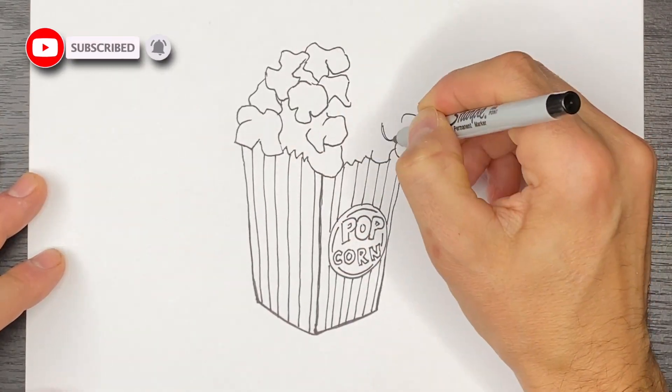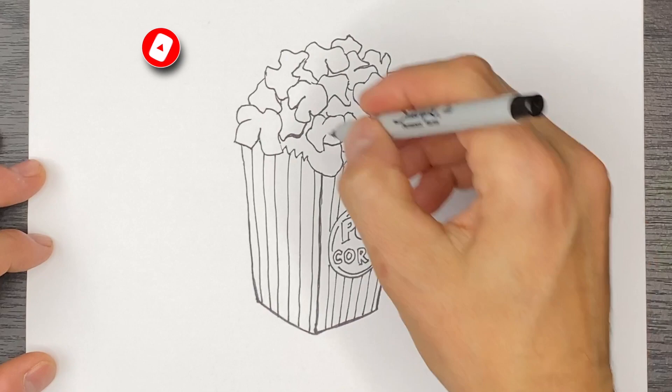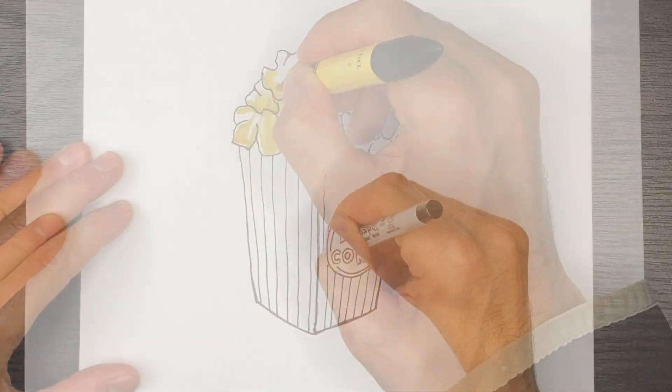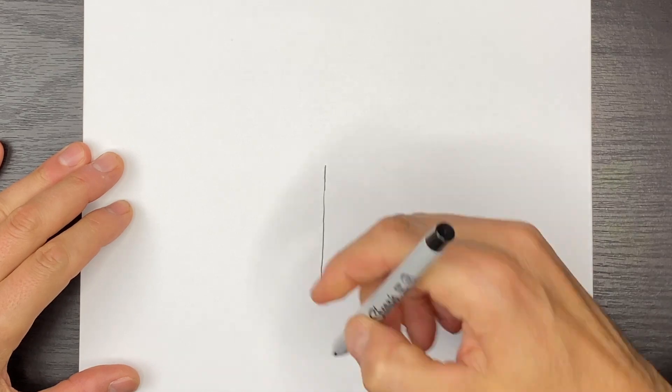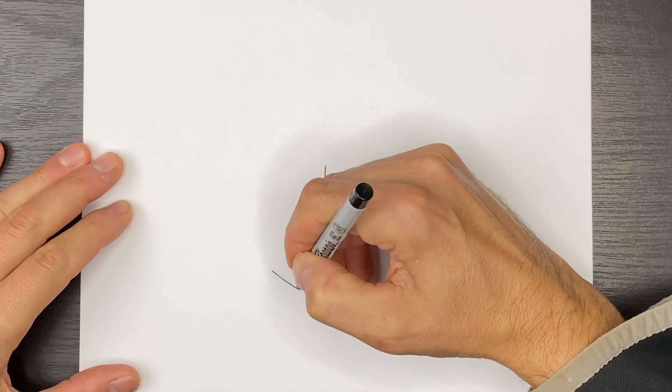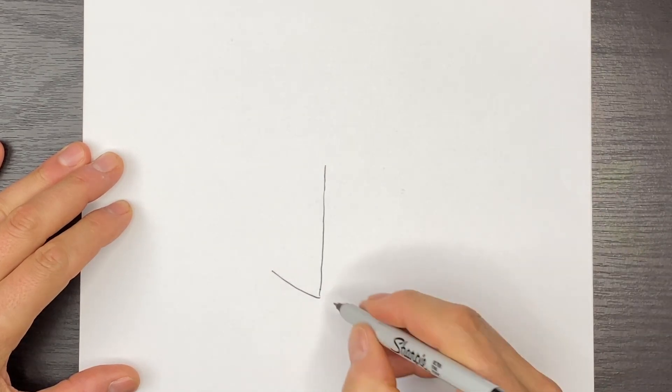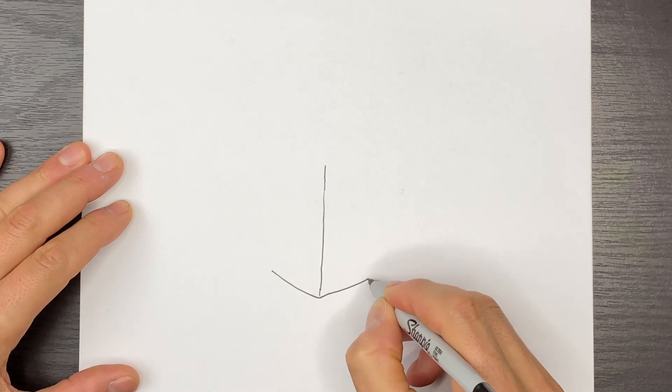Okay, the first thing I'm going to do is in the center of my page, I'm going to draw this line. It doesn't have to be perfectly straight. I have a little bit of curvature to it. Then we're going to go out to the left, like this, and then we're going to go out to the right, like that.